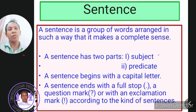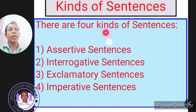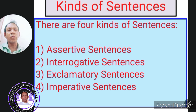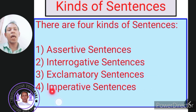Here comes the question of learning different kinds of sentences. Basically, there are four kinds of sentences: assertive sentences, interrogative sentences, exclamatory sentences, and imperative sentences.